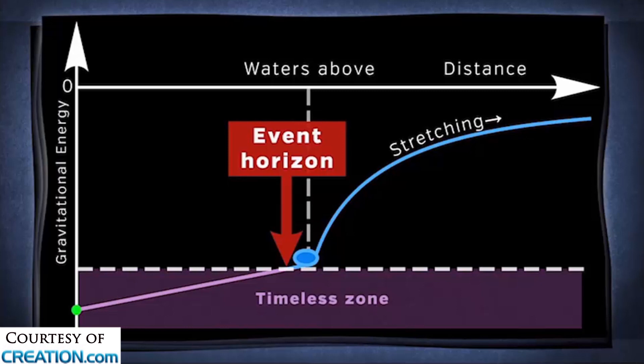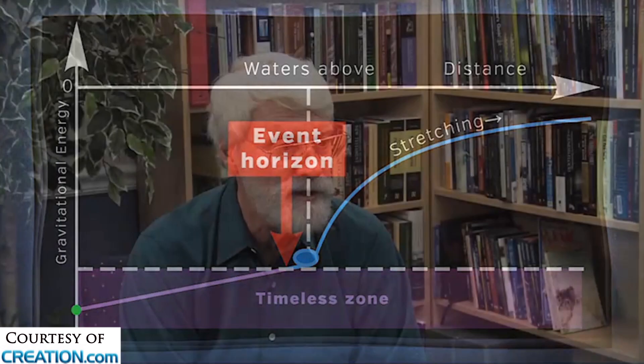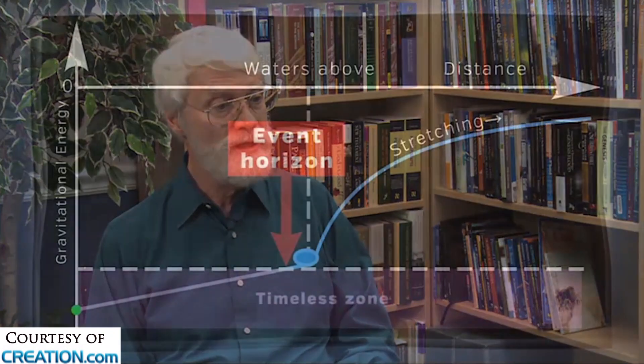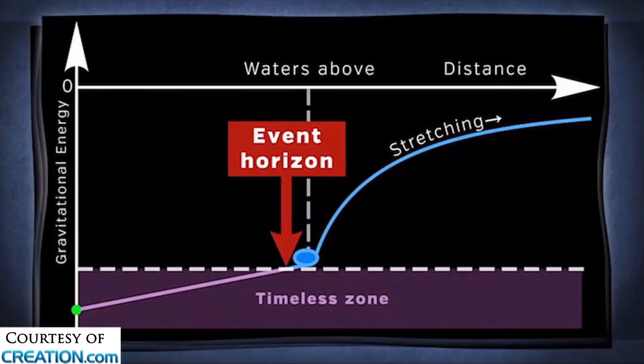Things to the left of the event horizon are going to have no clocks ticking. They're going to be in the timeless zone. Things to the right of the event horizon have normal time. So you're going to watch as we stretch the fabric. We're going to raise the dent above that dotted line, and we're raising things above the timeless level. And you'll see the event horizon move to the left.